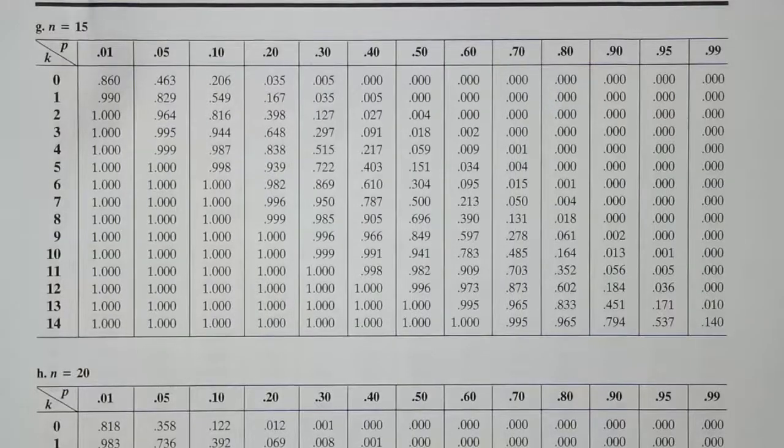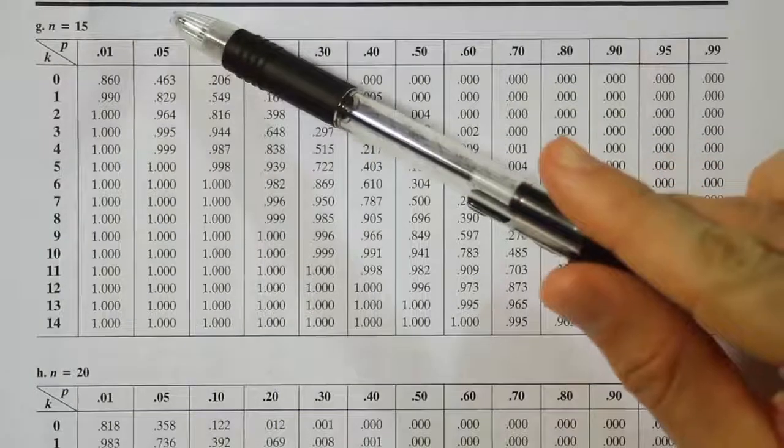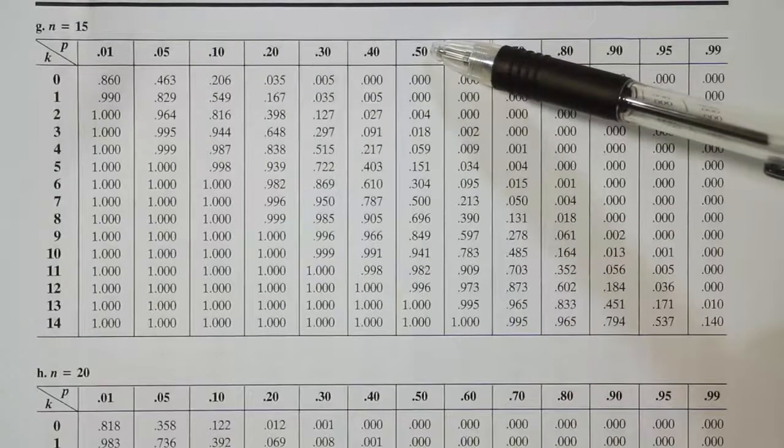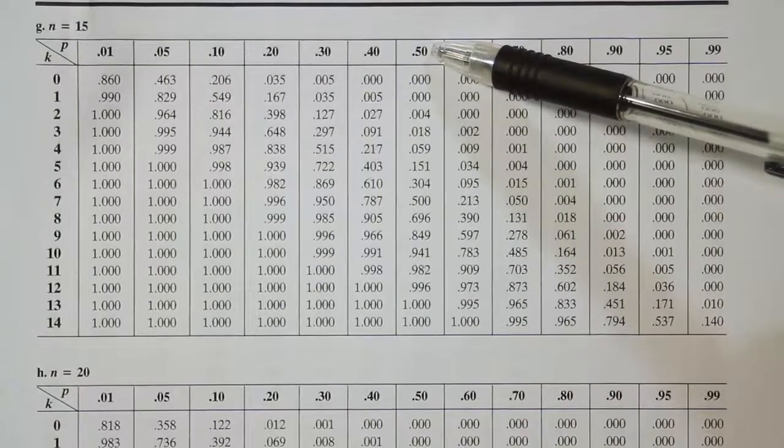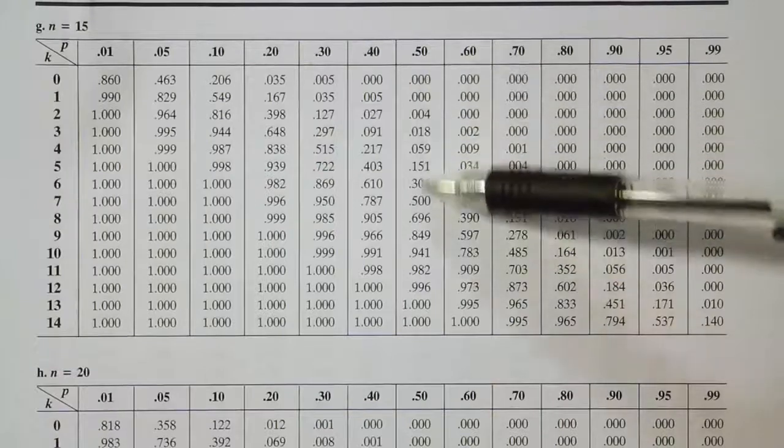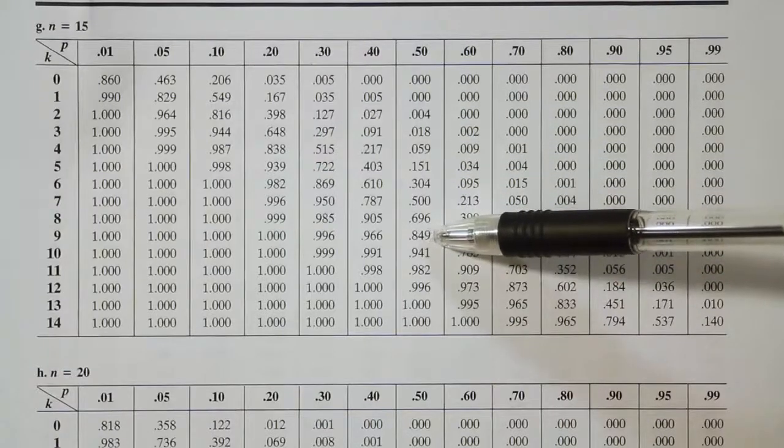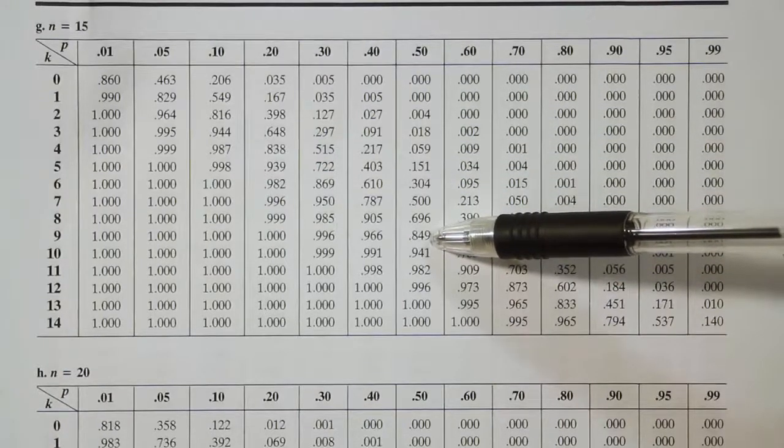Okay, so we're on the binomial table looking at n is equal to 15. We're going to be in the 0.5 column and we're going to want to go down to where k is equal to 9. So this is the value 0.849, 0.849.